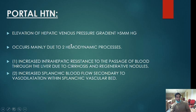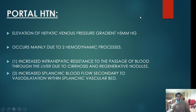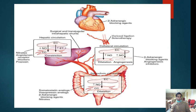Portal hypertension is defined as elevation of the hepatic venous pressure gradient greater than 5 mmHg. You cannot measure portal vein pressure directly, so the hepatic venous pressure gradient is an indirect measure. To measure it, you go from the inferior vena cava to the hepatic veins.